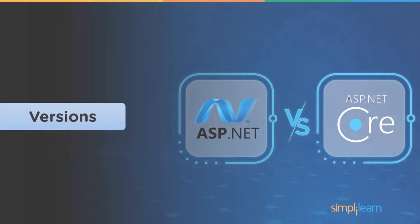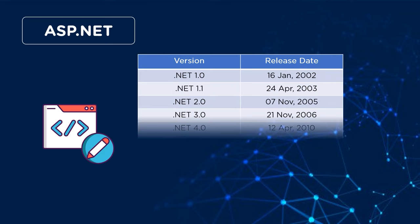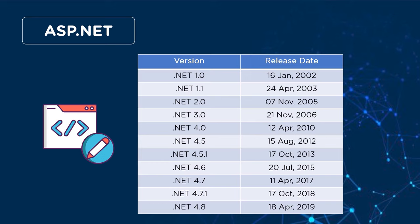Microsoft released the first version of ASP.NET on January 16th, 2002, named .NET 1.0. Later, on April 24th, 2003, the next version, .NET 1.1, was released with features to support databases for mobile application developers. Then on November 7th, 2005, .NET 2.0 was released with features like GridView and navigation controls.